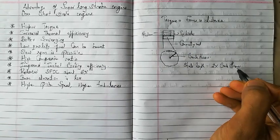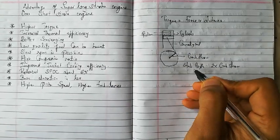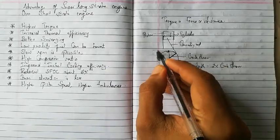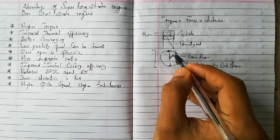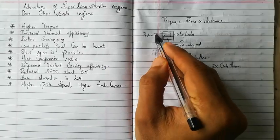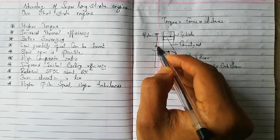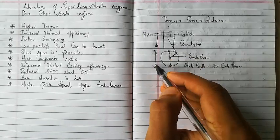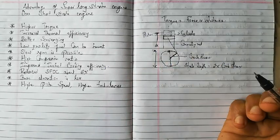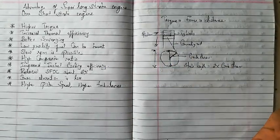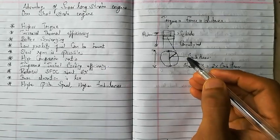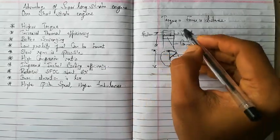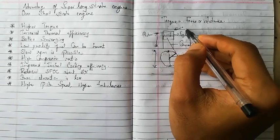If we increase the crank throw, it also increases the stroke length, because the distance the piston travels corresponds directly to the stroke length. So by increasing the crank throw, we increase both the stroke length and the torque. This is what happens in long stroke engines.